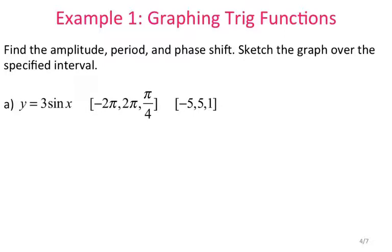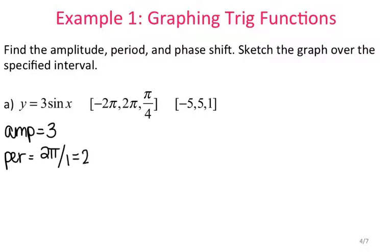Let's graph y equals 3 sine of x. The amplitude is 3, because that's the number in front of your trig function. The period is 2 pi divided by b, and b in this case is 1, so the period is 2 pi. Since we're not adding or subtracting anything from x, this one doesn't have a phase shift, so the phase shift is 0.